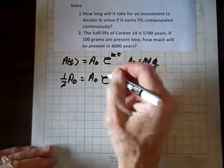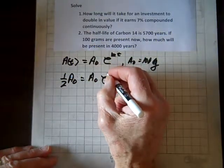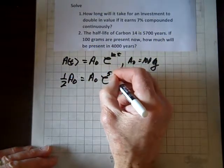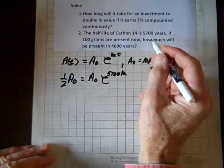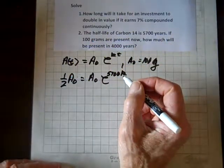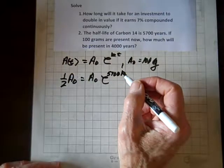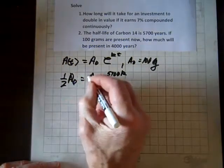So we've got one half of A sub 0 equals A sub 0 e to the 5,700 k. I hope I said 5,700 is the half-life. 5,700 years. Now the A sub 0's divide out.